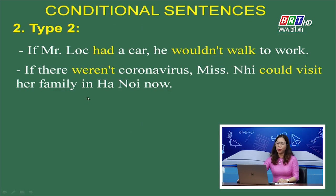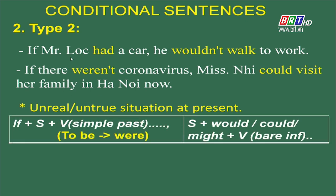Chúng ta cùng quan sát lại 2 ví dụ và nhìn vào mệnh đề if của câu điều kiện loại 2. Động từ được chia là had và to be là were — trong câu điều kiện loại 2, mệnh đề if sẽ được chia ở thì quá khứ đơn (past simple). Tuy nhiên, đối với động từ to be, trong văn viết chúng ta chỉ dùng hình thức were cho mọi chủ ngữ — được gọi là thì quá khứ giả định (past subjunctive). Mệnh đề chính: would / could / might + V (bare infinitive) — tùy theo tình huống và ngữ cảnh. Các em ghi chép công thức vào vở.